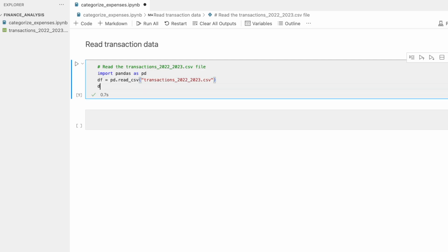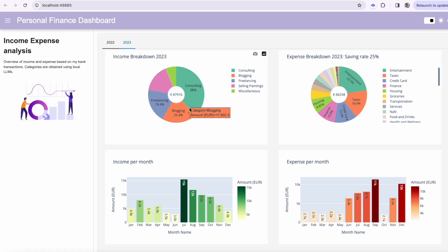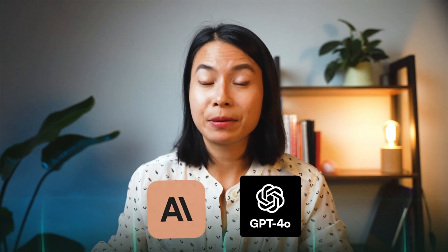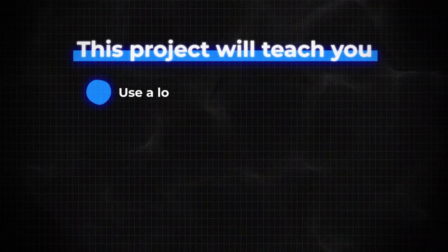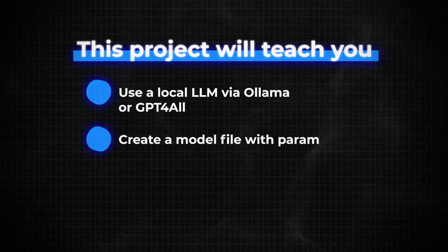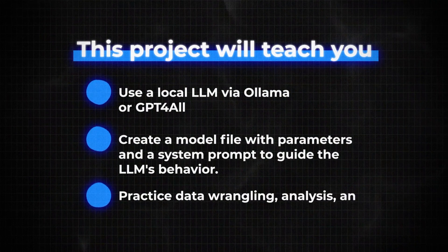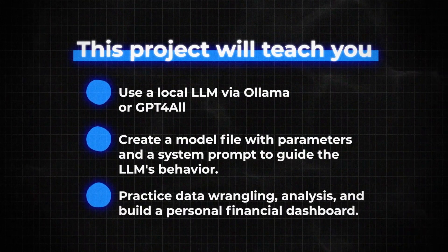You can also use an open source local LLM to create your AI project. I used a local LLM for a project where I wanted to analyze my bank statements, categorizing my expense items and finding patterns in my finances over the past two years. These open source models are free, but note that since we often can only run smaller versions locally, the output might not be as good as larger models like GPT-4o or Claude 3.5 Sonnet. This project will teach you how to run a local LLM via Ollama, create a model file with desired parameters, write system prompts to control LLM behavior, practice data wrangling and analysis skills, and even create a financial dashboard. Check out the in-depth tutorial on my channel, link over here.